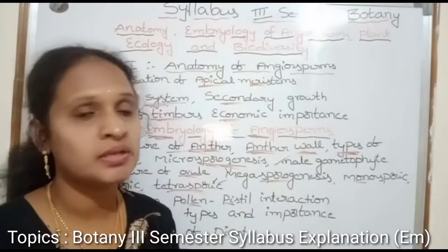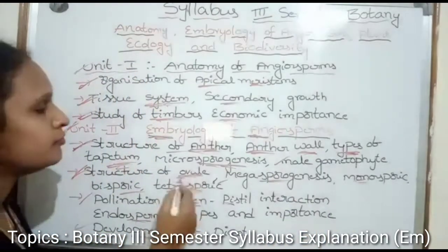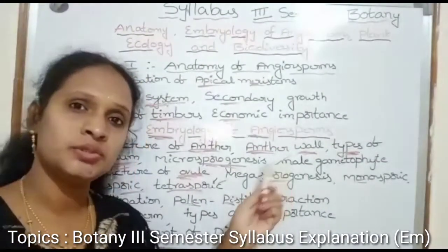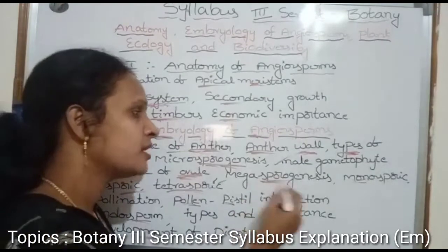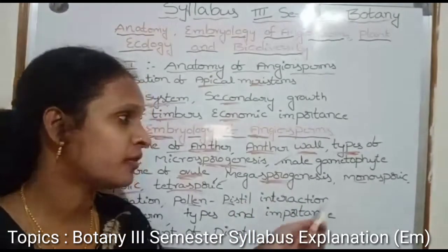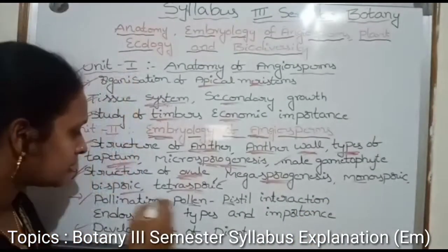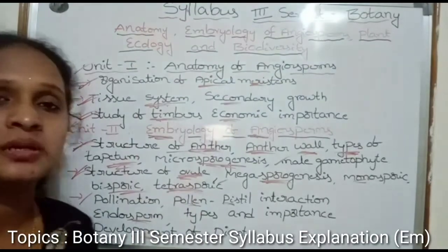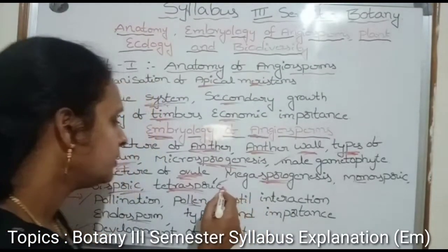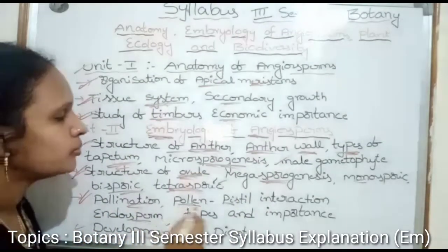Male gametophyte — this is our topic. Next is Structure of Ovules — ovules is a structure of the female. In this case, megasporogenesis. What kind of formation? Monosporic development, bisporic, tetrasporic — whatever types are there: monosporic, bisporic, tetrasporic development, etc. Next topic is pollination and pollen-pistil interaction.